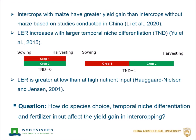Our previous study showed that intercrops with maize have higher yield gain than intercrops without maize, based on studies conducted in China, and that LER increases with larger temporal niche differentiation. TND is an index quantifying the non-overlap period as a proportion of the total growing period of intercrops. TND is zero for simultaneous intercropping and one when the first species is harvested before the second one is sown.